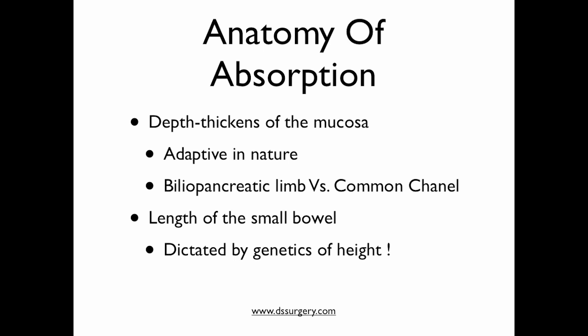This is adaptive in nature. When we compare the biliopancreatic limb — the underused mucosa — to the common channel in patients who have had the duodenal switch operation, the common channel bowel is very hypertrophic and thick, whereas the biliopancreatic limb is relatively thin. A visual analogy: if one arm were in a cast and the other was exercising constantly, after six months the arm in the cast would show muscle wasting and thinning — a similar adaptive process occurs in the bowel.